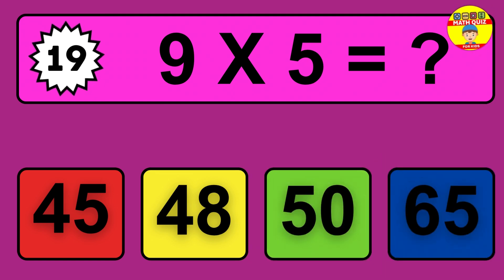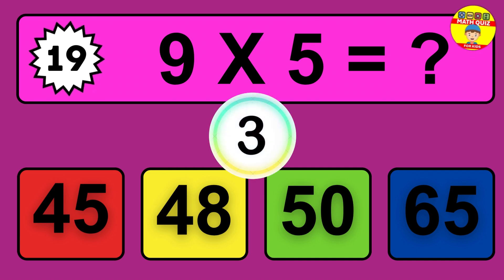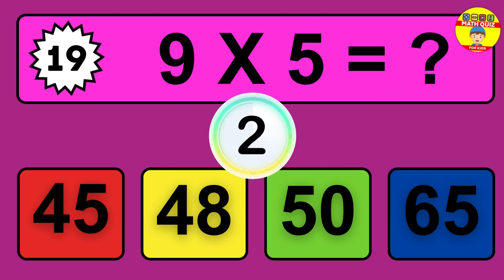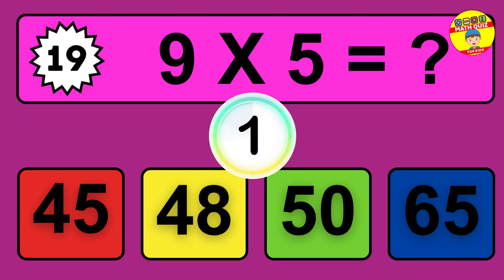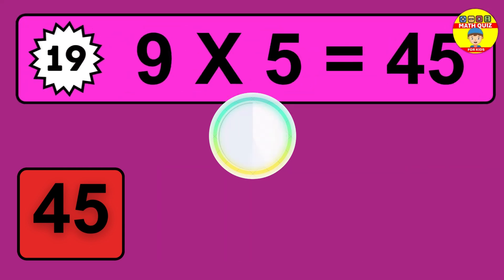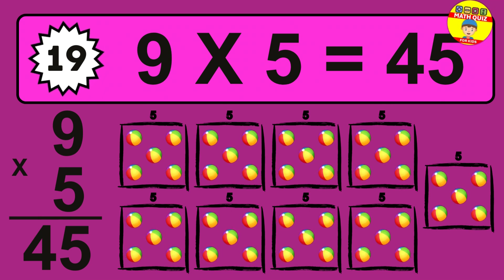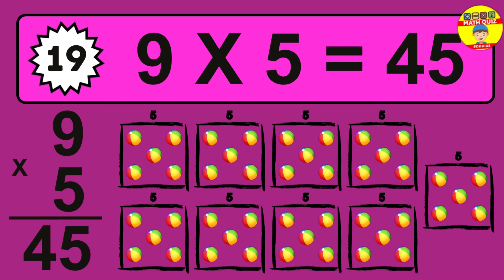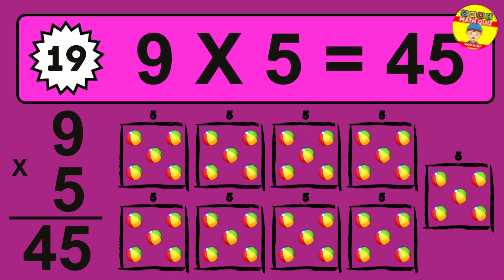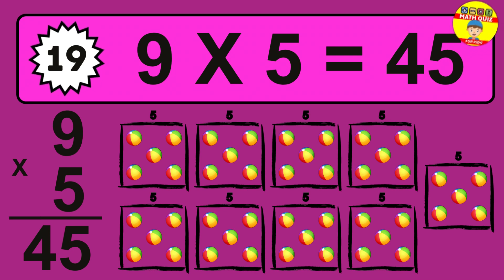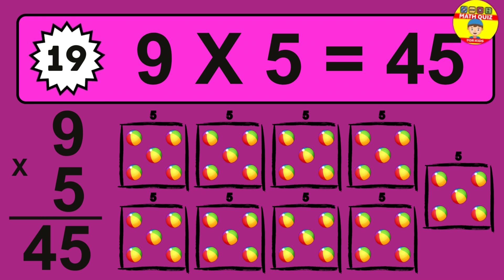Question 19. 9 times 5 equals what? The answer is 9 times 5 is 45. To calculate, we have 9 groups with 5 balls each one. So how many balls do we have? 45 balls.